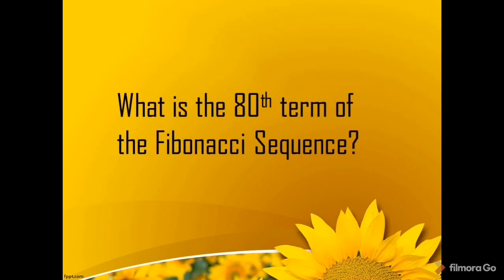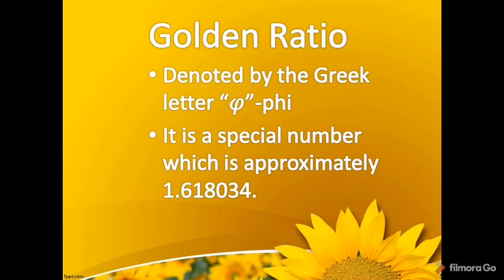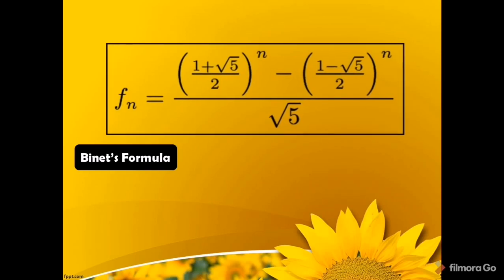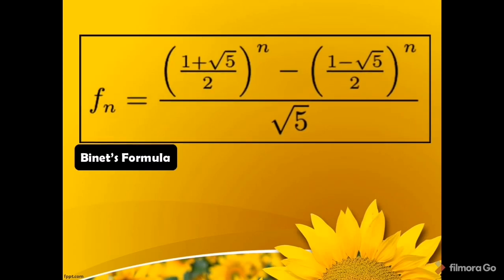What is the 80th term of the Fibonacci sequence? It may take an hour or more to find it manually. However, one may calculate the Fibonacci number using the golden ratio, a special number approximately equal to 1.618034. Using Binet's formula: F(n) = [(1 + √5)/2]^n − [(1 − √5)/2]^n, all over √5.